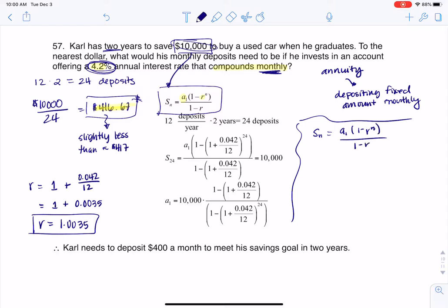If we start to look at this, I have $10,000. That will equal A sub 1, that's going to be my variable. And I'm going to have 1 minus 1.0035, and my N value here is 24 because I'm making 24 payments. And this would be in ratio to 1 minus 1.0035.